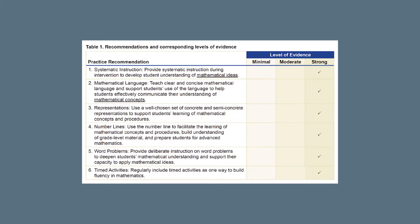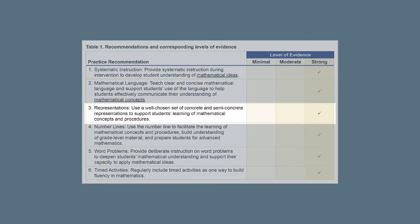Recommendation 3 of the What Works Clearinghouse Practice Guide, Assisting Students Struggling with Mathematics: Intervention in the Elementary Grades, supports the use of concrete and semi-concrete representations as students are learning mathematical concepts and procedures. The What Works Clearinghouse and the expert panel assigned a strong level of evidence to this recommendation, meaning that there is consistent evidence that meets What Works Clearinghouse standards and indicates that the practice improves outcomes for diverse student populations.